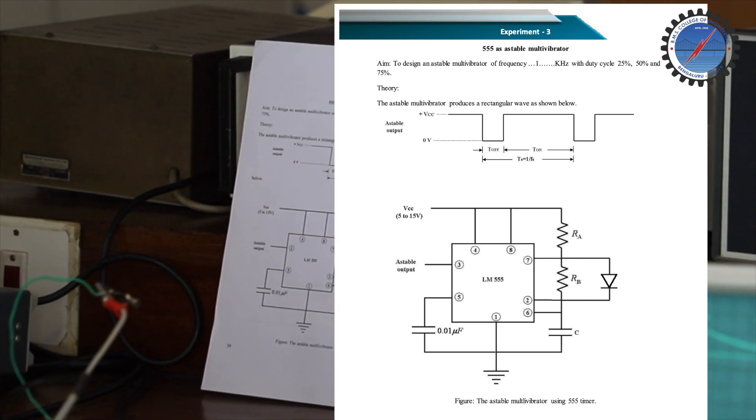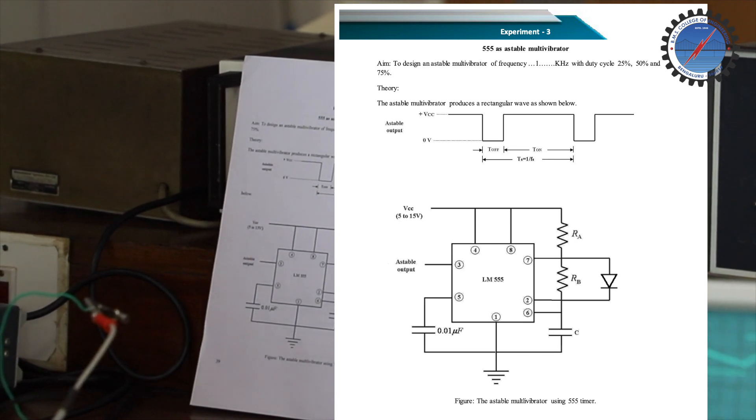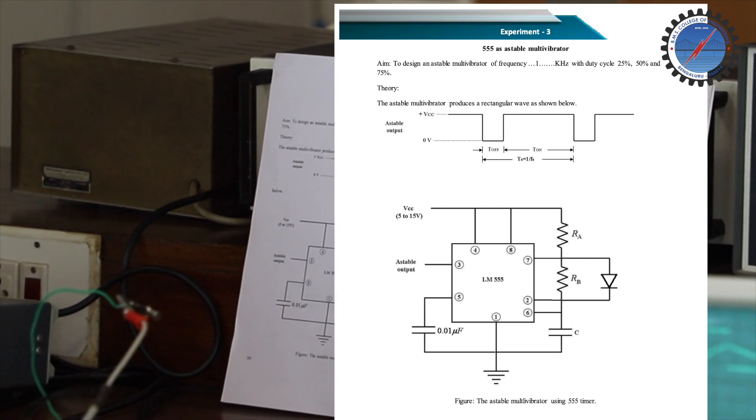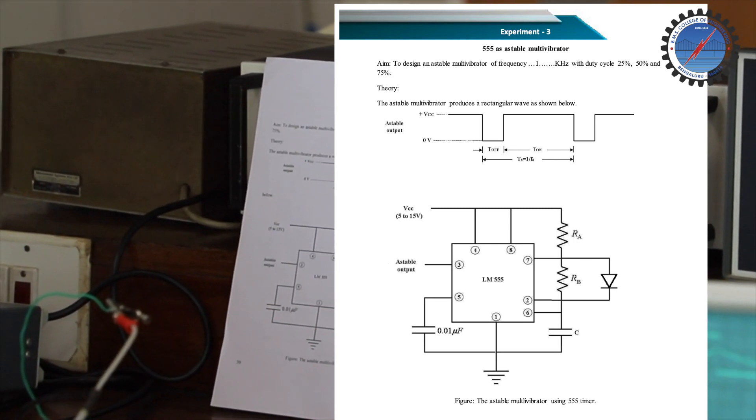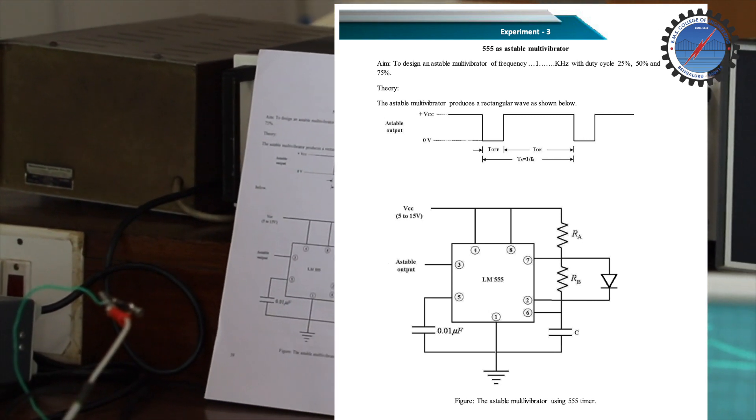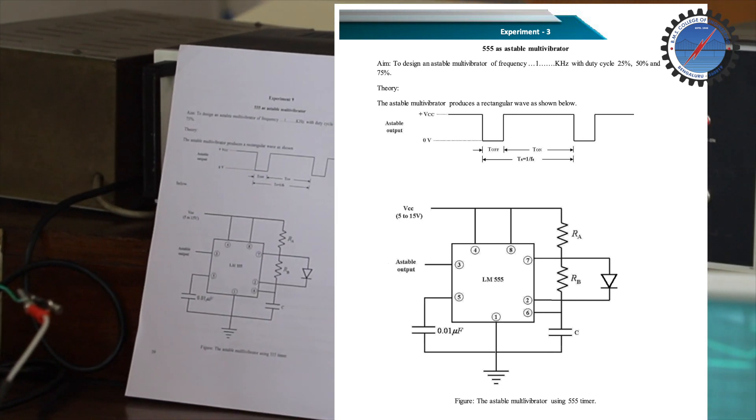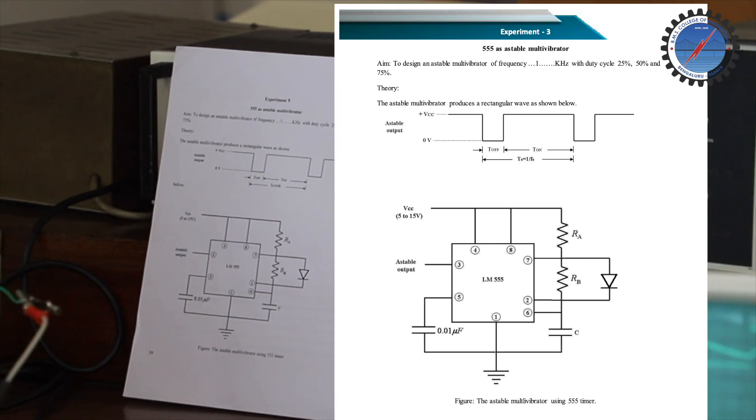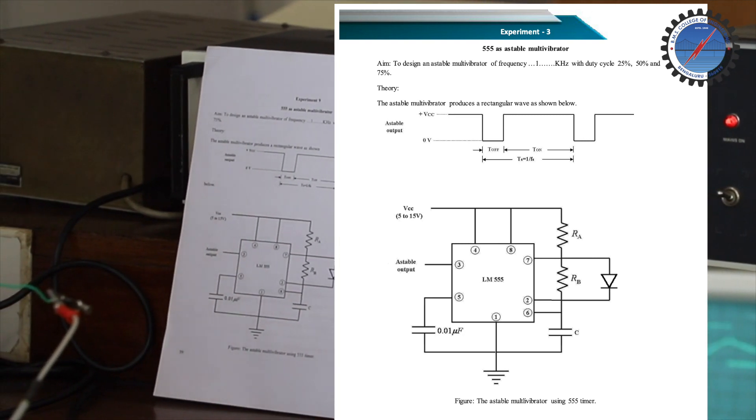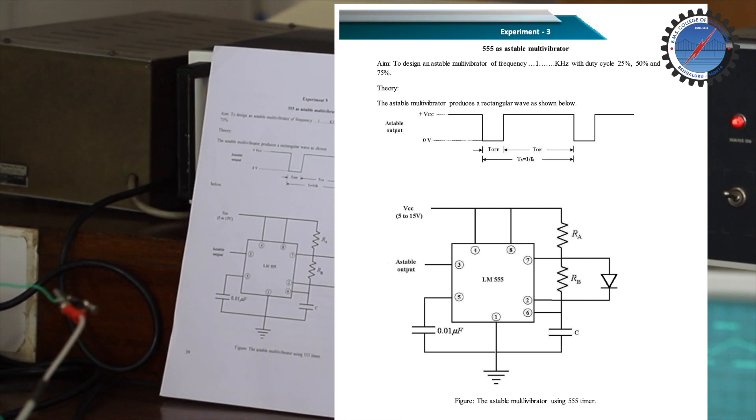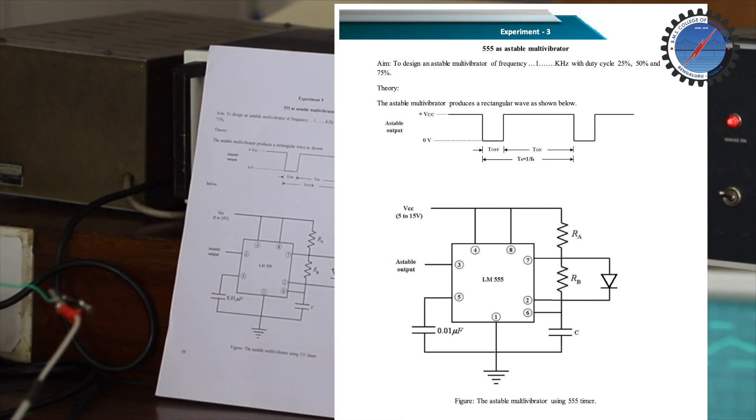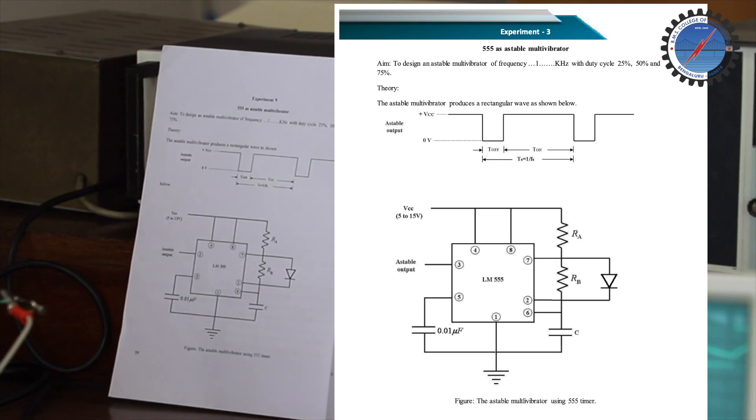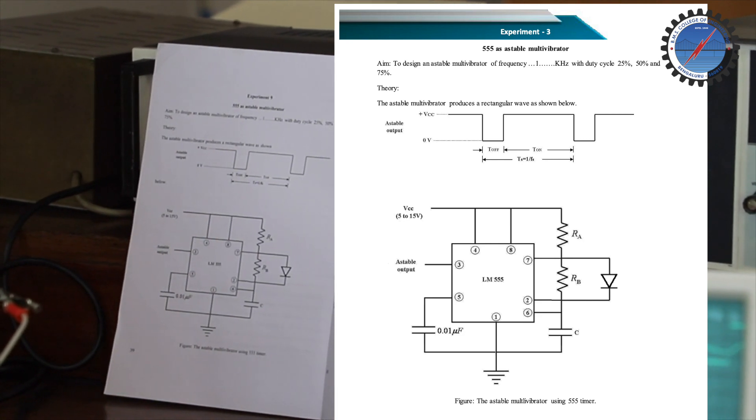The duty cycle expression is given as T_on by T_on plus T_off, where T_on plus T_off is the total time T. The frequency of the signal—since we designed it for 1 kilohertz—can be verified practically using the expression 1 divided by T_on plus T_off. We will see 3 different cases under this experiment.